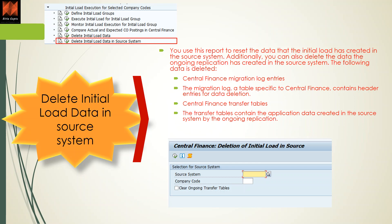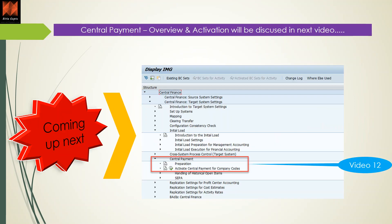To summarize: for initial load you define load groups, execute, monitor, and optionally run a comparison. Deletion is need-based — only execute if something is wrong — and must be done in both source and target systems. This video completes the initial load section. The next video, video 12, will cover central payment — an overview, activation steps, and repercussions of activating central payment.